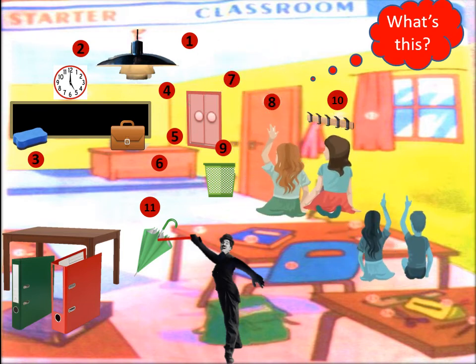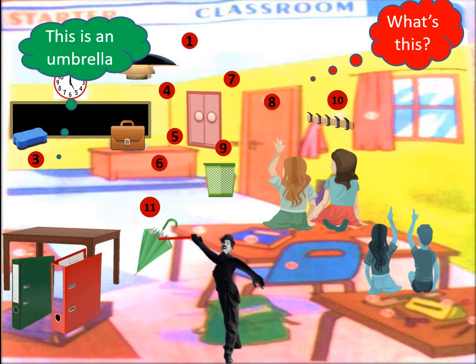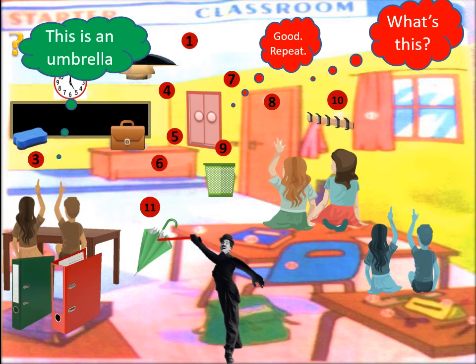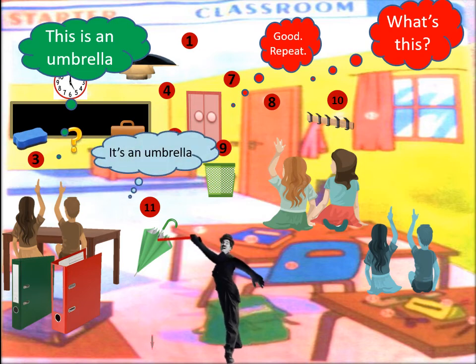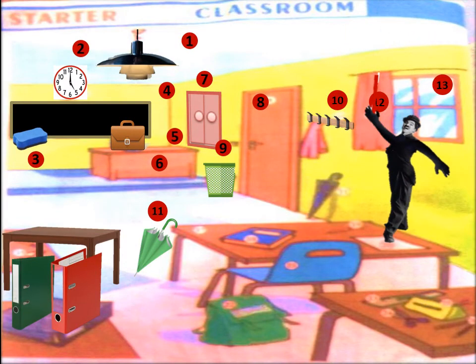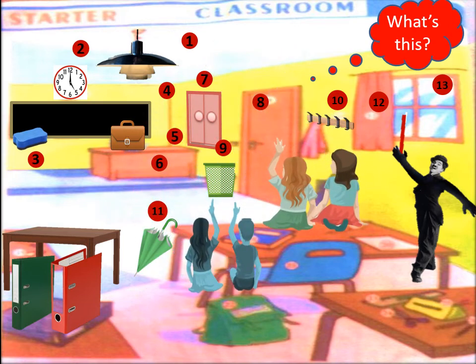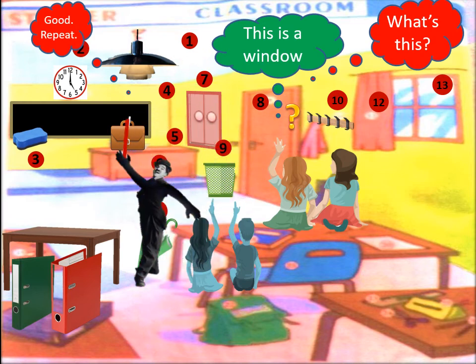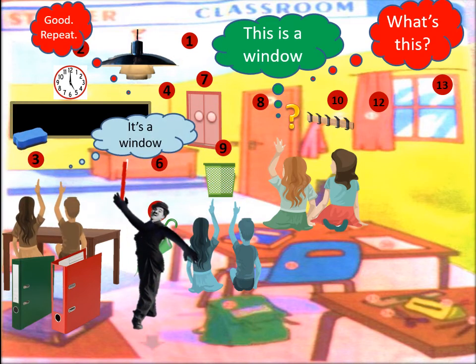What's this? This is an umbrella. Good, repeat. It's an umbrella. That's an umbrella. Good, repeat. It's an umbrella.